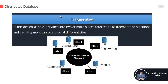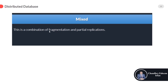Fragmented design means the data is divided according to parts. In this design, a table is divided into two or more pieces, referred to as fragments or partitions, and each fragment can be stored at a different site. We can divide our table on the basis of a property, such as a department or city. For example, for an employee table, we can store data of people from Lahore at the Lahore site.